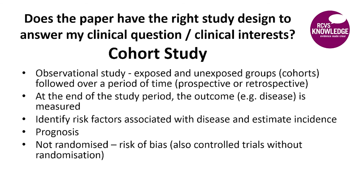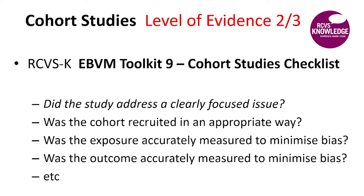Observational or epidemiological studies include cohort studies, case control studies, and cross-sectional studies. A cohort study looks at a group of exposed and a group of unexposed animals, following them over time prospectively or retrospectively, then at the end looking at outcomes such as presence or absence of disease. By comparing these groups you can identify risk factors, estimate disease incidence, and get information about prognosis. The problem with cohort studies is they're not randomised, so there's a risk of bias. Toolkit number 9 on the RCVS Knowledge website helps appraise cohort study validity.